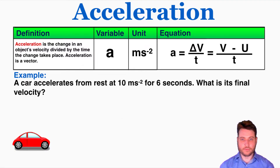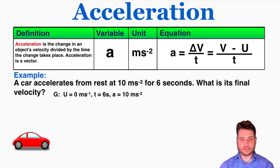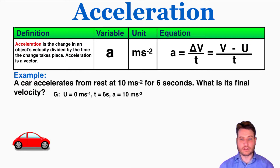We'll start with an example problem. We have a car accelerating from rest at 10 meters per second squared for 6 seconds — what is its final velocity? I'm going to plug this into the GUESS method and write down my given information. The starting velocity is 0 because the car accelerates from rest. The time is 6 seconds, and the acceleration is 10 meters per second squared. Our unknown is the final velocity.